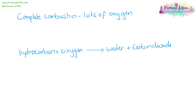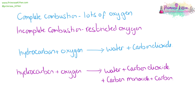The complete combustion of a hydrocarbon involves lots of oxygen — that is your roaring blue flame on a Bunsen burner. This gives hydrocarbon plus oxygen turning into water and carbon dioxide. Incomplete combustion is where there's not enough oxygen — that is your orange flame. This is much more problematic because as well as water and carbon dioxide, we're going to get carbon monoxide, which is highly toxic. Your red blood cells prefer it to oxygen, so you will actually suffocate to death, generally in your sleep, and carbon, which is black soot.